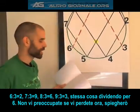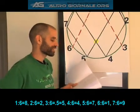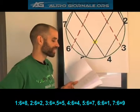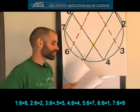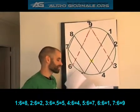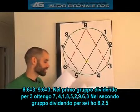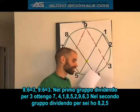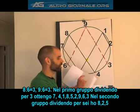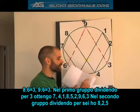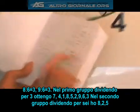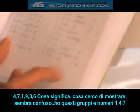The same thing is going to happen when I divide by 6, but backwards. Don't be worried if you're losing me a little here — I'm about to explain this. 1÷6=8, 2÷6=2, 3÷6=.5 which is 5, 4÷6=4, 5÷6=7, 6÷6=1, 7÷6=9, 8÷6=3, 9÷6=3. So in my first group dividing by 3, I have 7, 4, 1; 8, 5, 2; 9, 6, 3. In my second group dividing by 6, I have 8, 2, 5, 4, 7, 1; 9, 3, and 6.